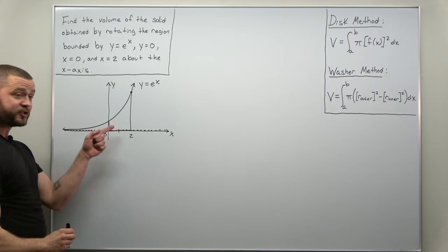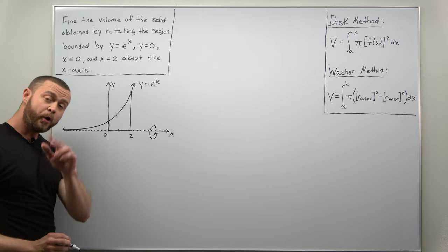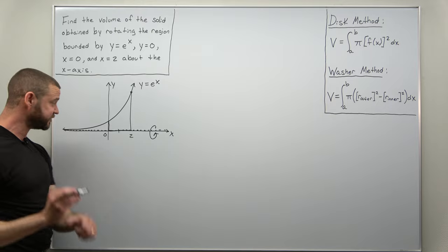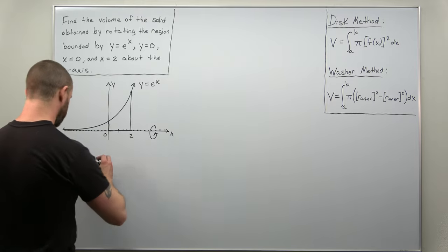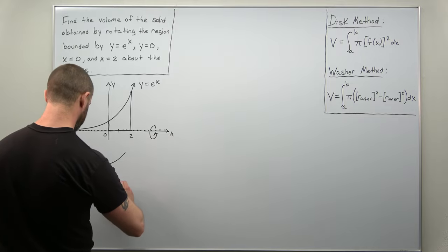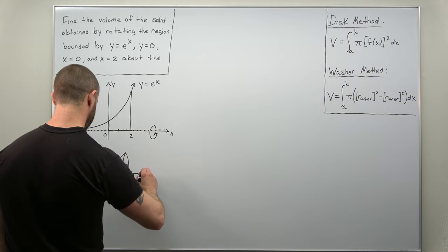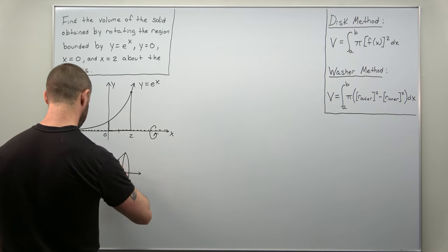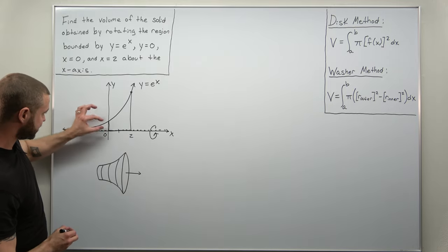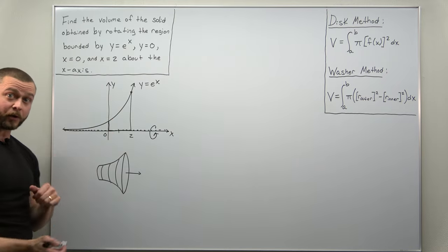Now if we take that region and then rotate it about the x-axis, I always like to sketch what the solid looks like, just a very rough sketch of that. If you rotate that, the solid that you get looks roughly like that. You can see here down to this side it's going to be kind of narrow at the back end here, and as you go in that direction it's going to flare outwards.